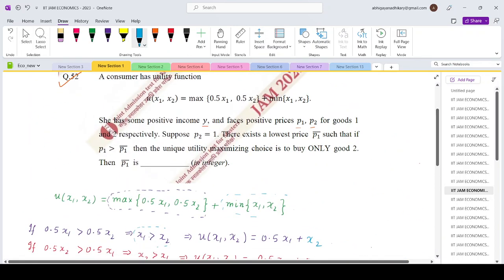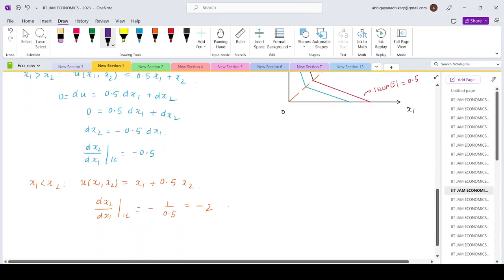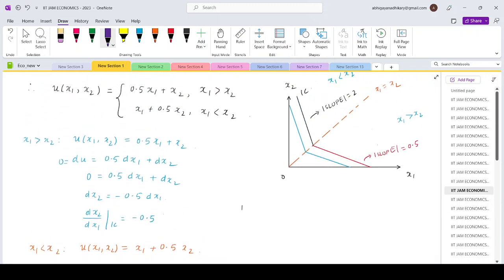Now it is given in the question that the income is y. p₁ and p₂ are the prices of the two goods, and p₂ equals 1. These are the conditions that are given over here.